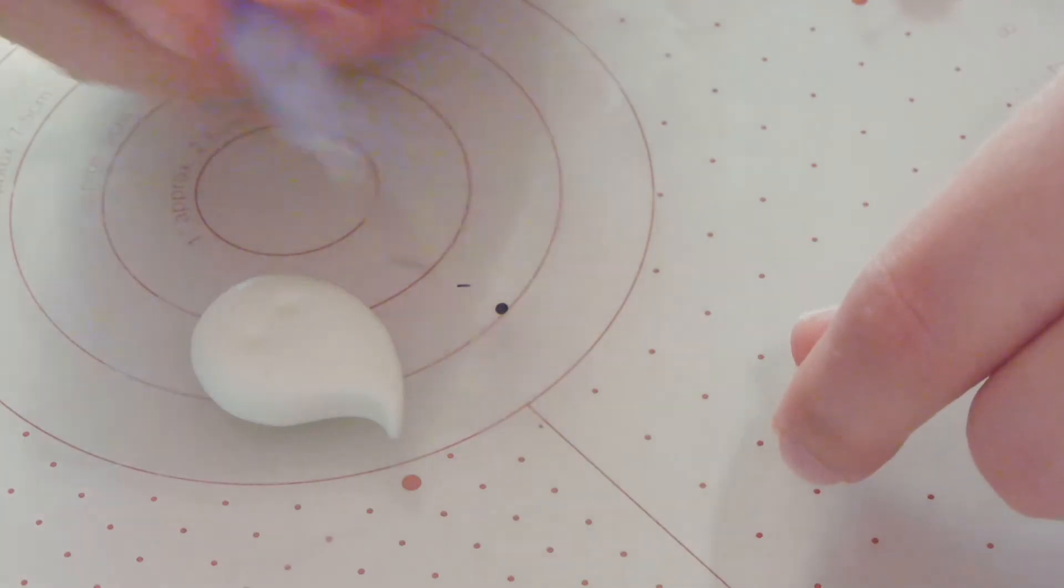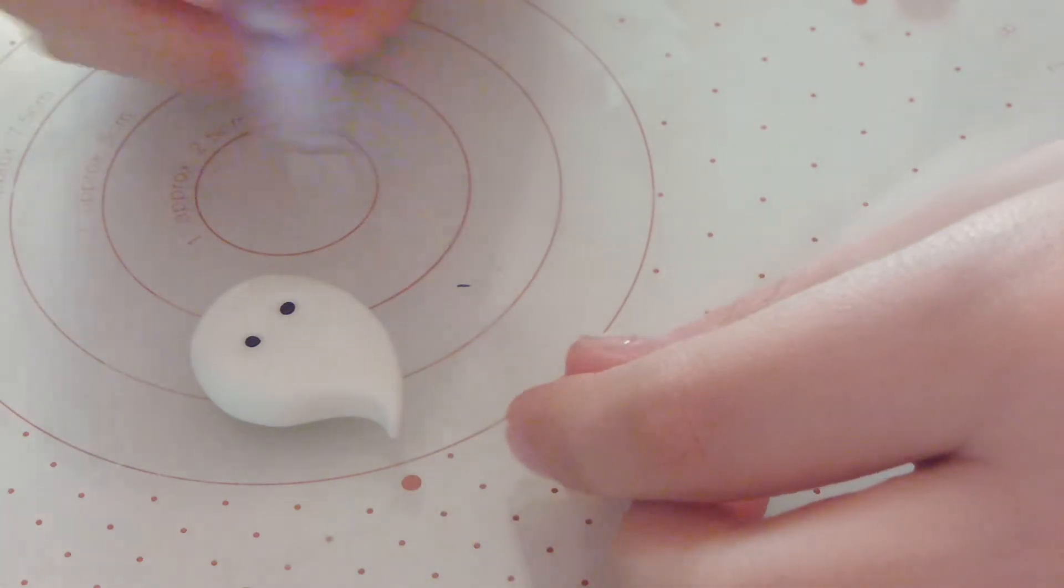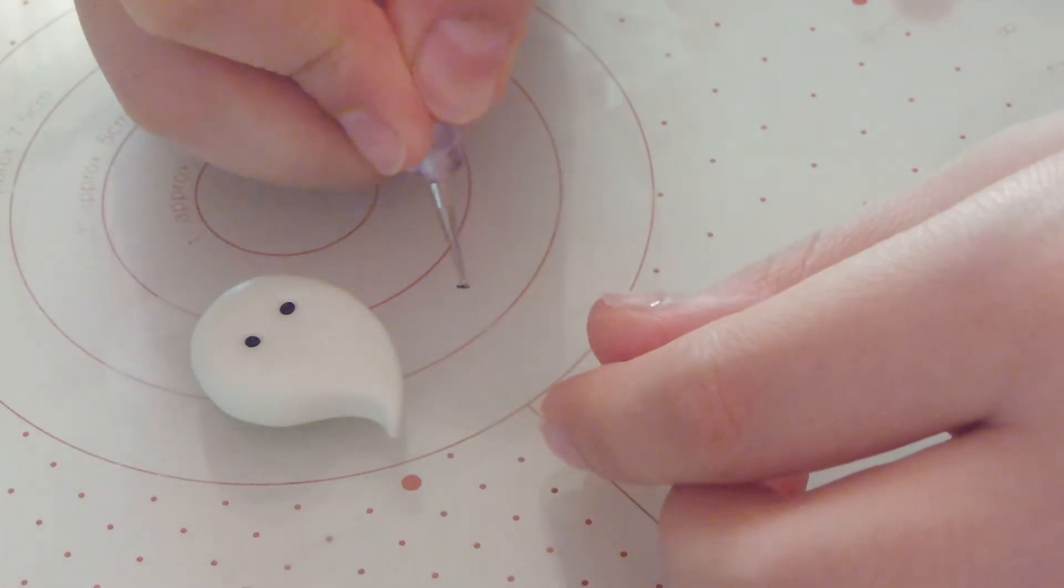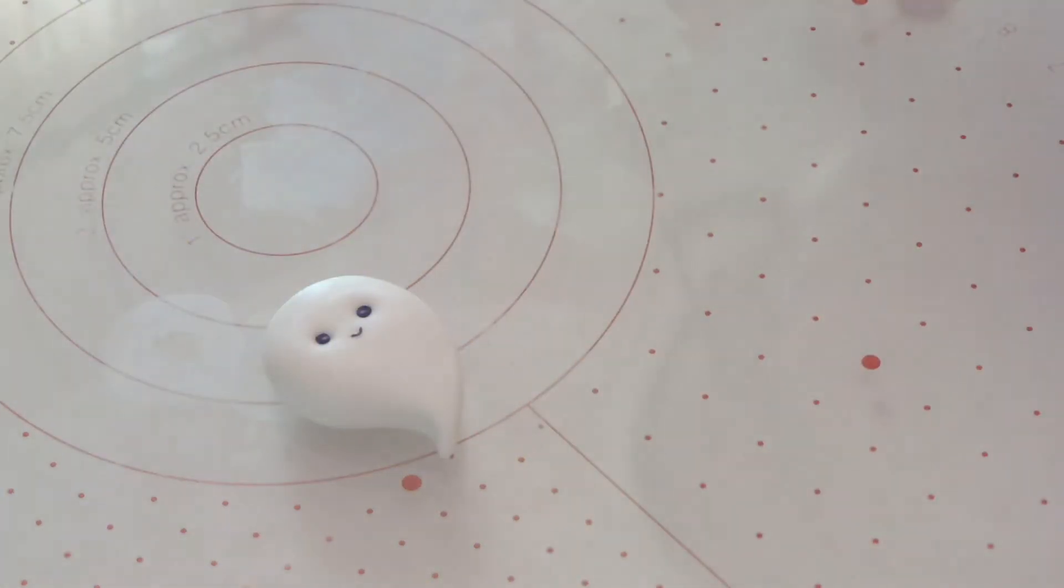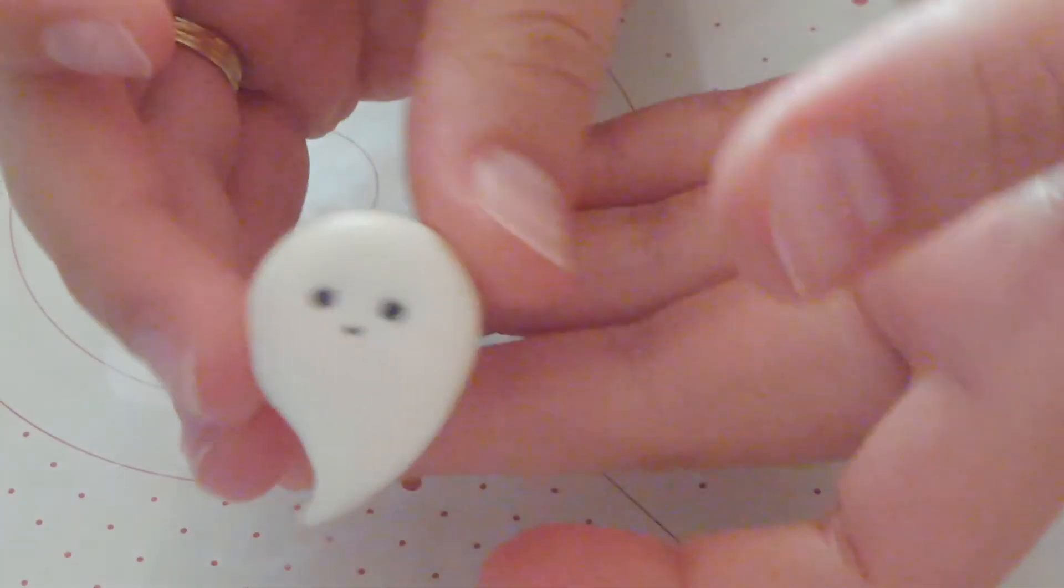Just like that, pop them into place. This is a very easy and simple tutorial guys. Just push them down to secure them and pop the smile on. I did make them a little bit lopsided but there we go, he's all ready for the oven.